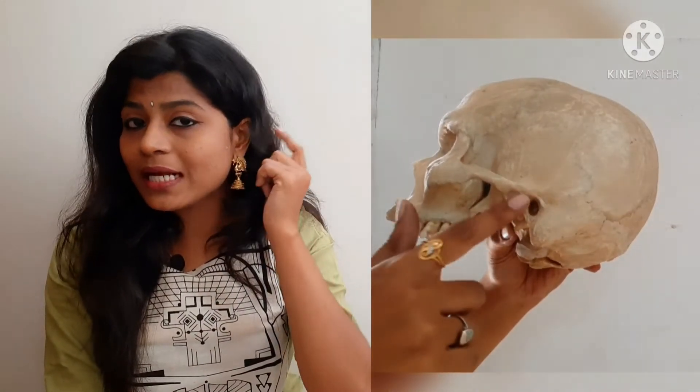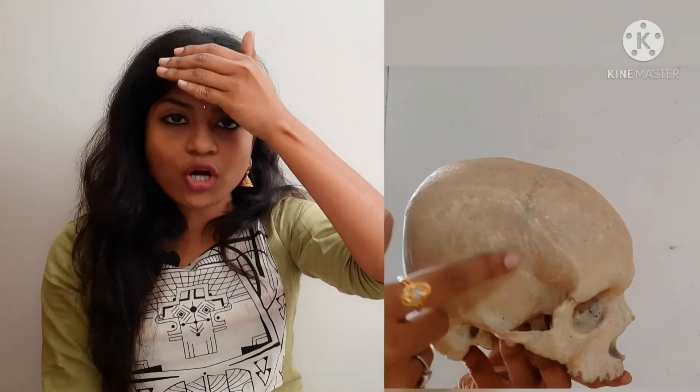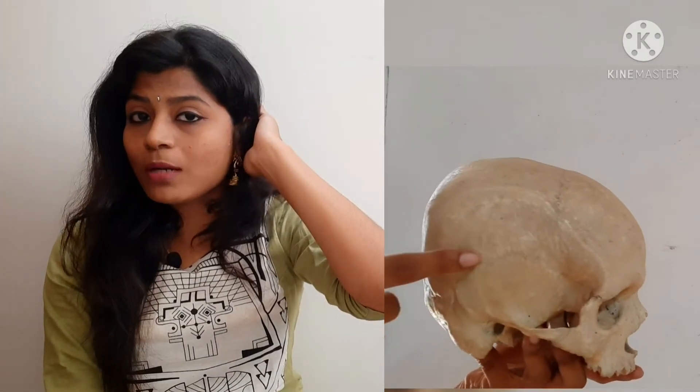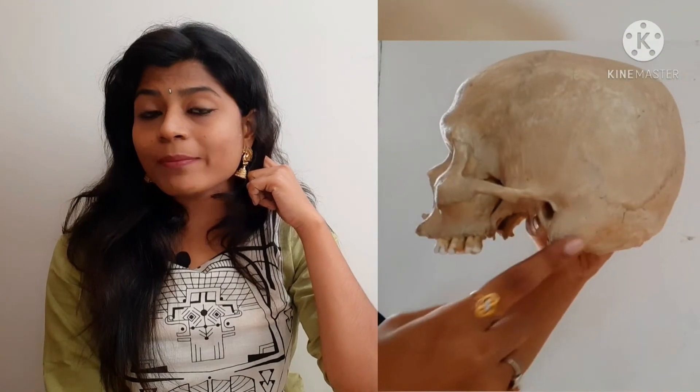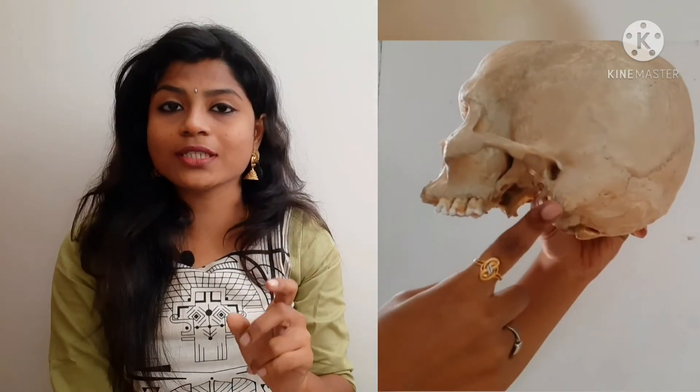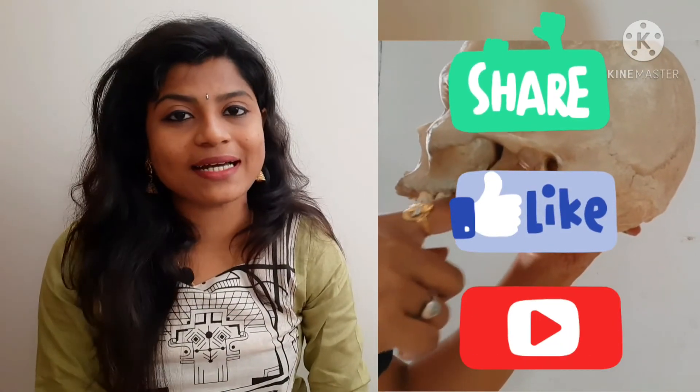The zygomaticofacial foramen is on the zygomatic bone. In the lateral view, there is the external auditory meatus. There is also the pterion — the junction of the frontal bone, parietal bone, temporal bone, and greater wing of the sphenoid. There is a mastoid process and the spine of the sphenoid bone.